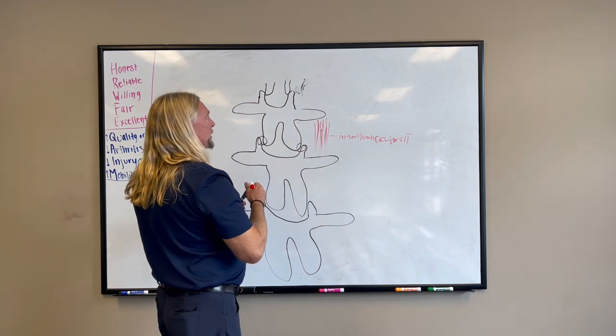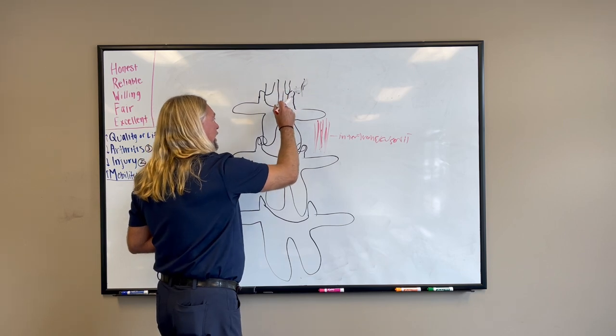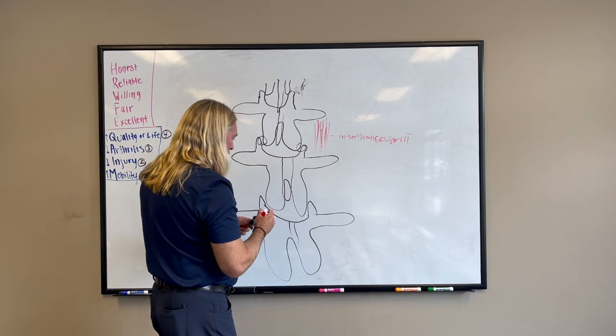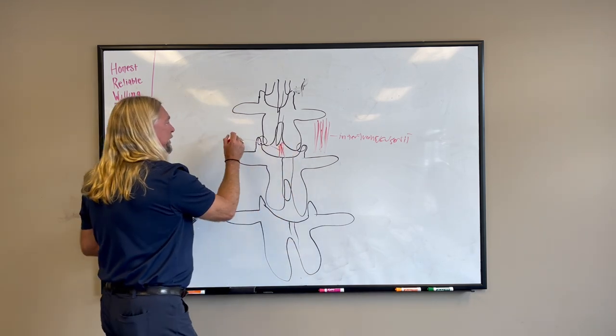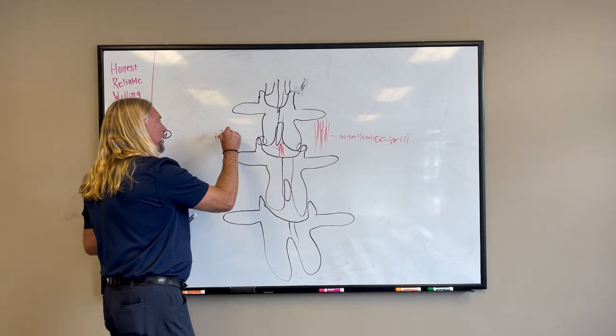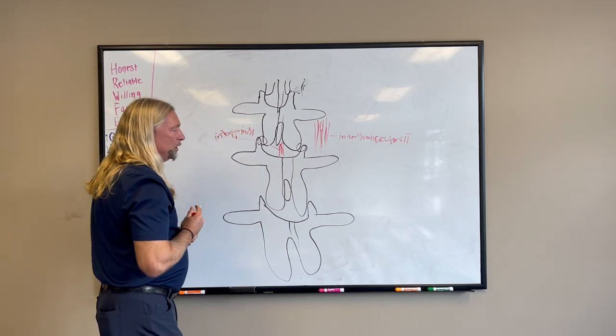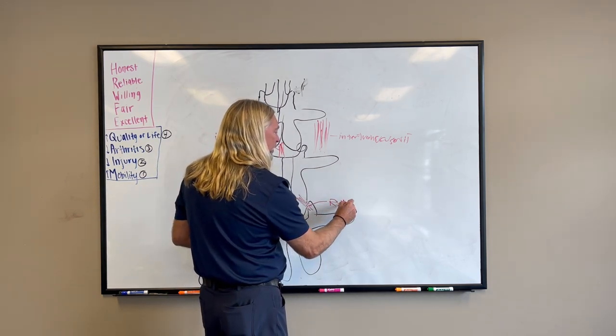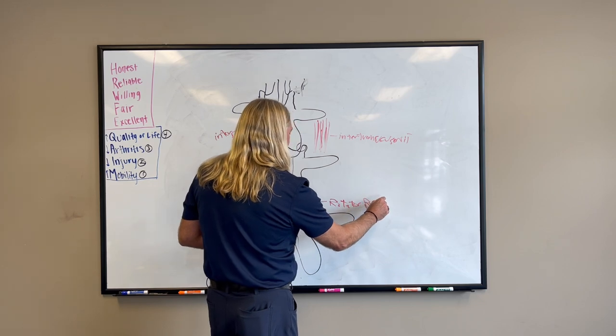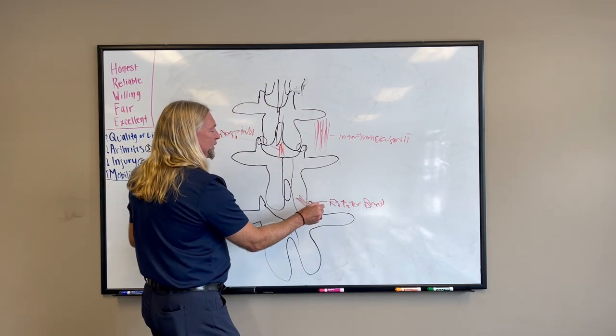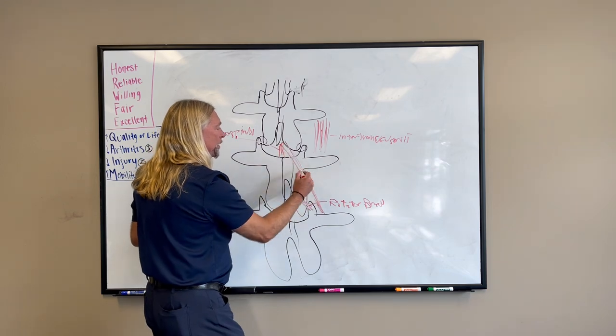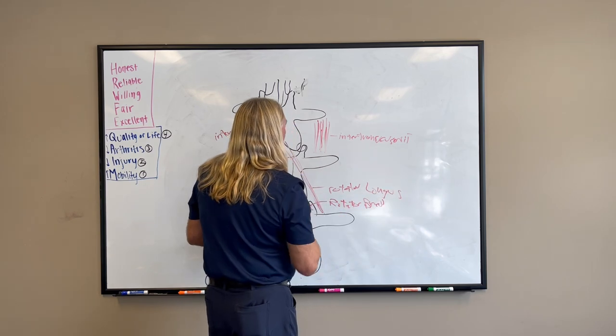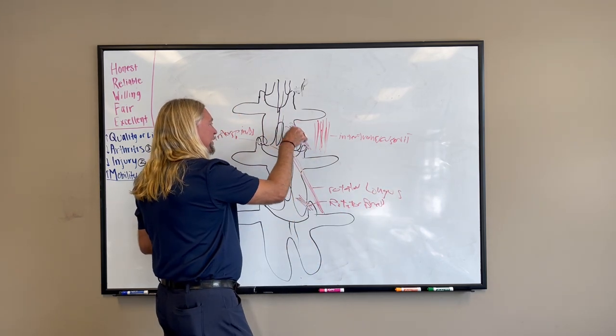You also have between the spinous processes of these vertebrae, you have muscle called interspinalis. You also have the muscle here, rotator brevis, longus. You also have muscle here, rotator longus. And you also have your multifidus.